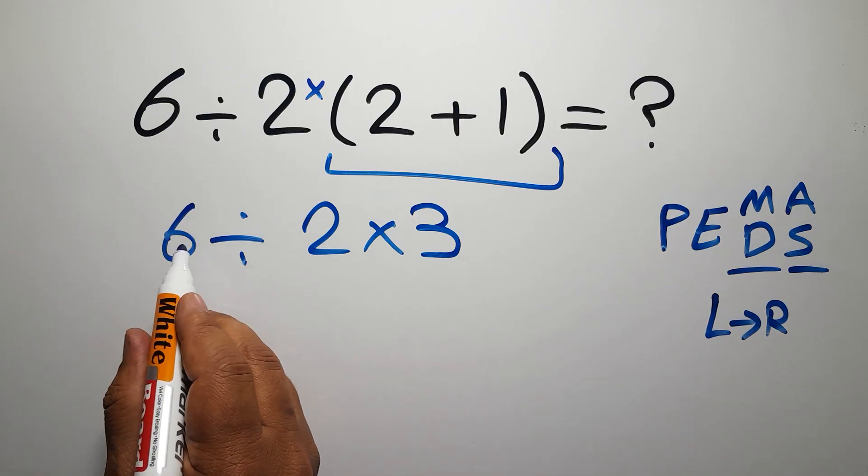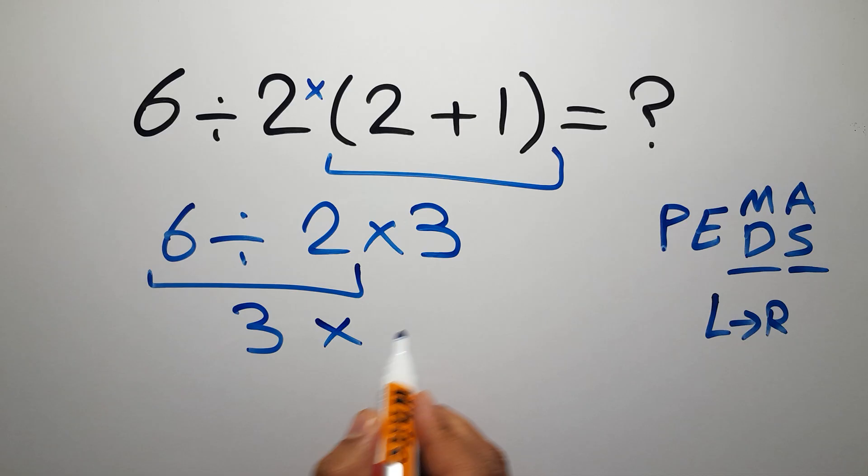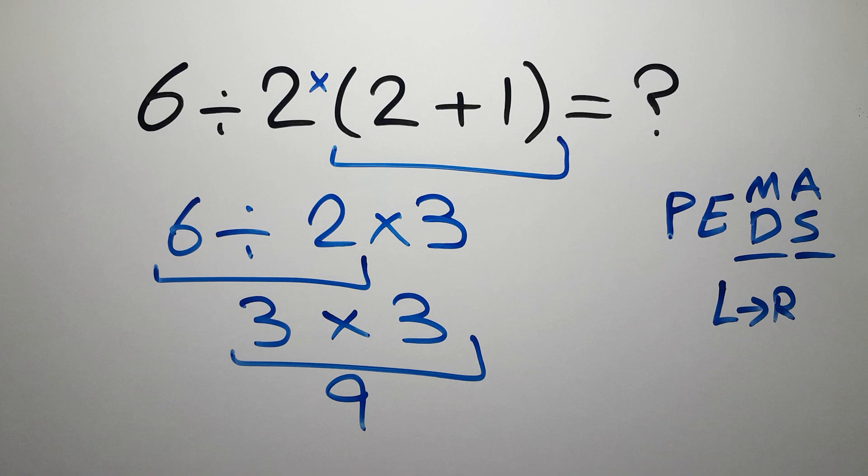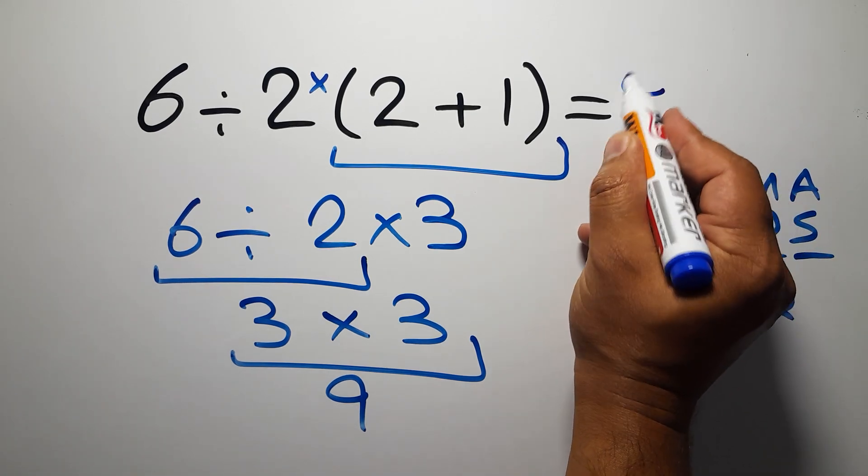So 3 times 3 is just 9, and this is our final answer to this problem. The correct answer is 9.